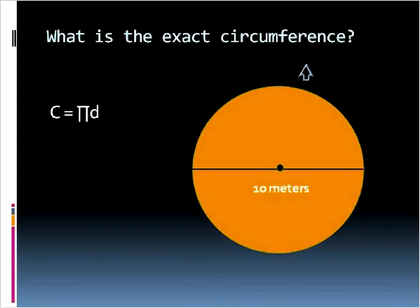So what is the exact circumference of this orange circle? If we're given the diameter, we know it's the diameter times pi. So let's substitute the value of 10 into our equation. The circumference is equal to pi times 10. And this is the way we write that: 10π.